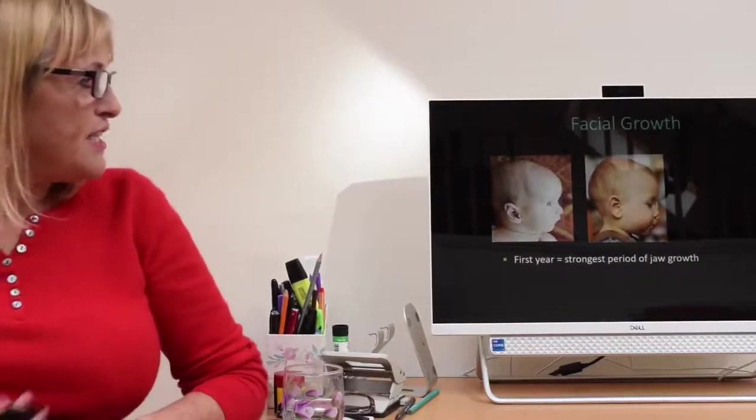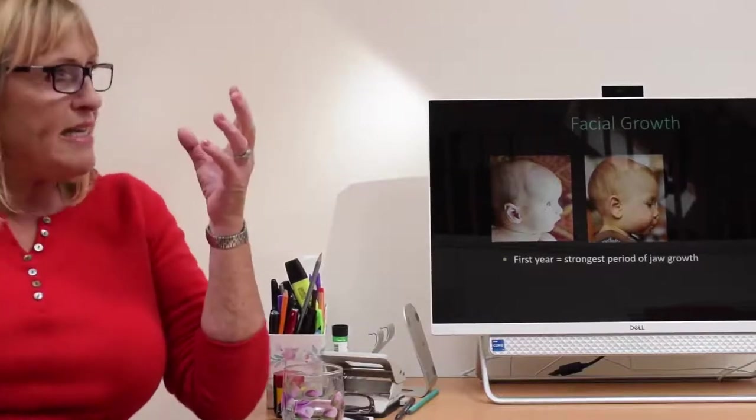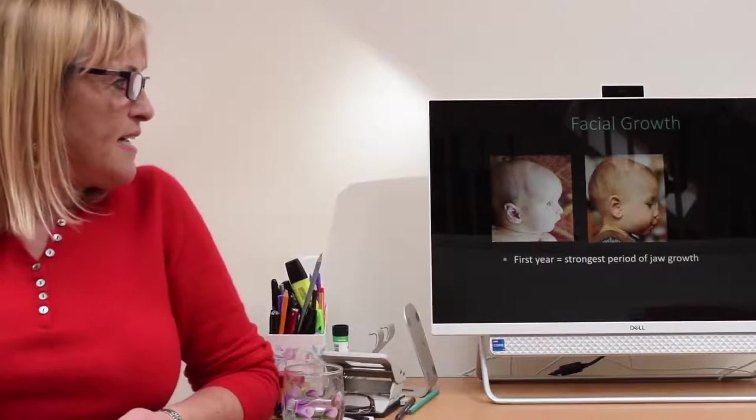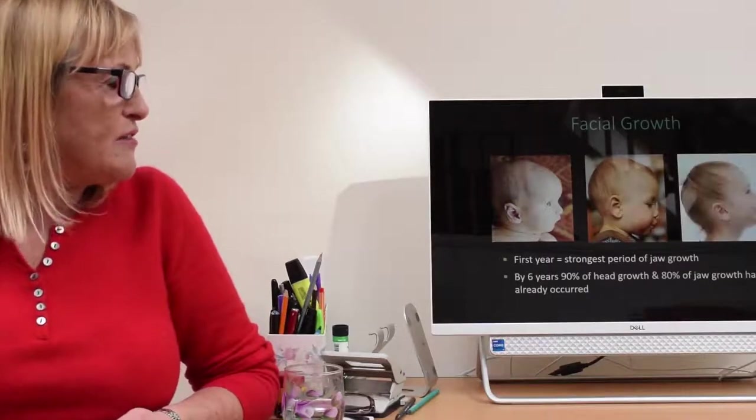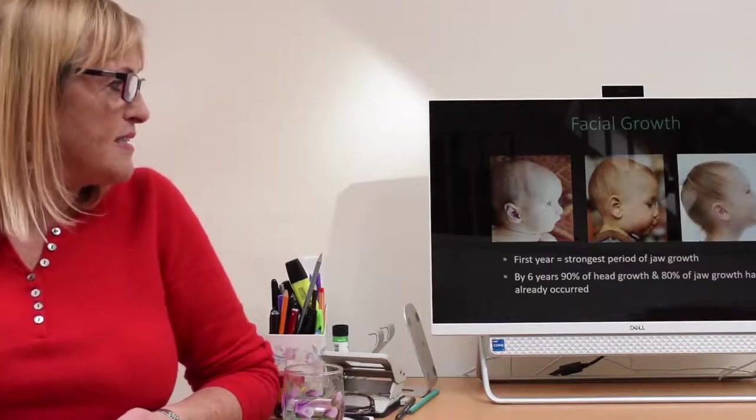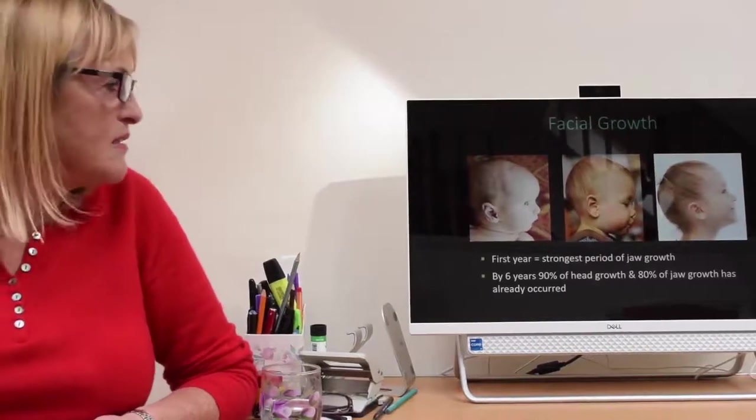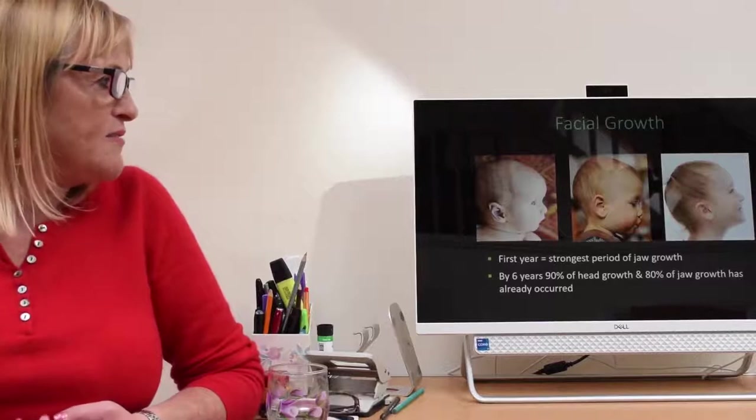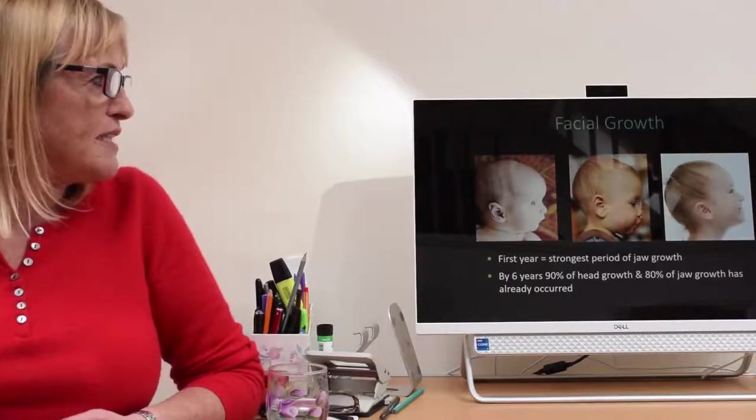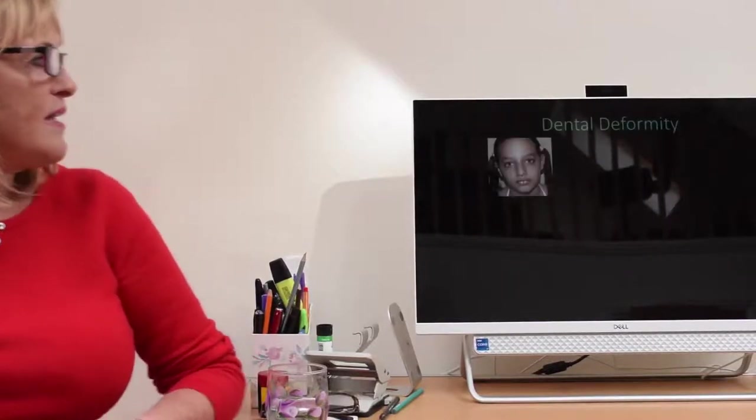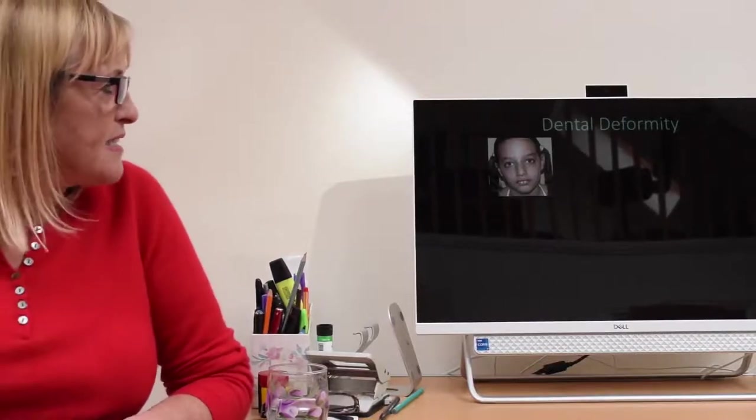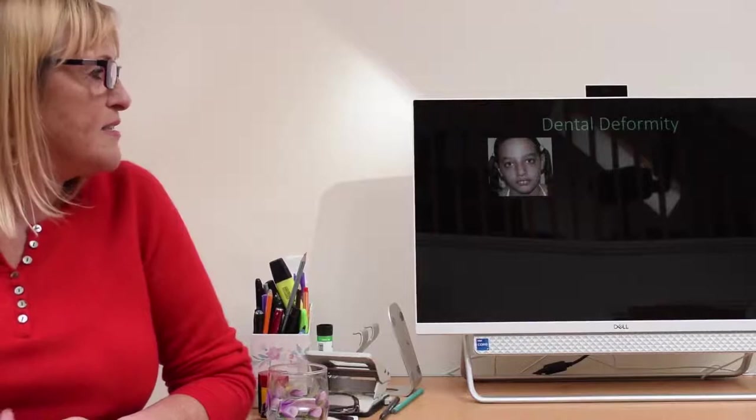In the first year, you've got quite a big cranium when you're born, but the face develops over the first year. Much of the growth has occurred by the time the child is six. We're not even picking these things up or treating them until after the fact really. By six, 90% of head growth and 90% of jaw growth has already occurred.